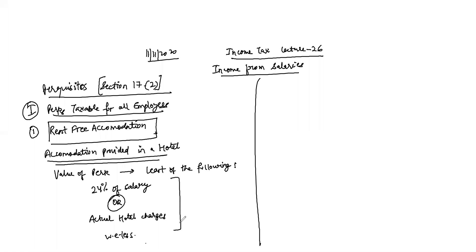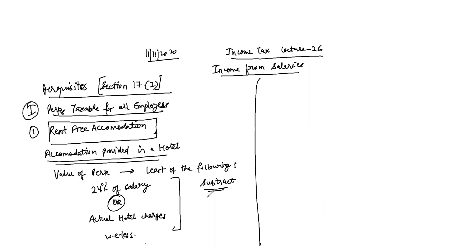From this amount, subtract what you subtract is the amount paid by the employee. For example, if the rent is 10,000 rupees and you are paying 2,000, then 8,000 will be taxable. So whatever amount you are bearing, minus that — that will be your value of taxable perquisite.